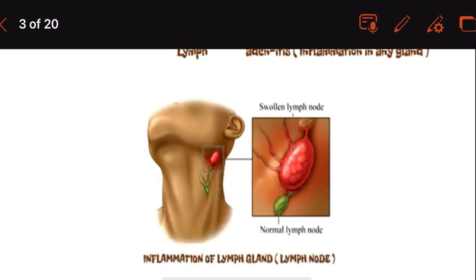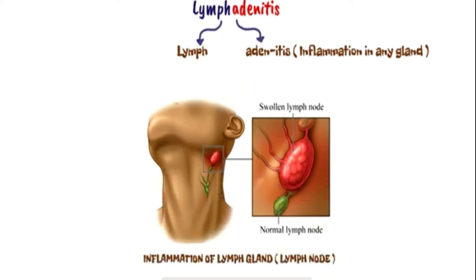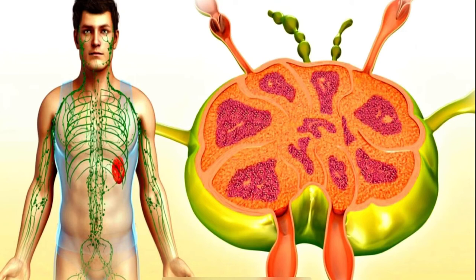The word lymphadenitis is divided into two: lymph and adenitis. The inflammation of any gland is adenitis — just like 'itis' means inflammation, adenitis means inflammation of a gland. Here they are speaking about the inflammation of lymph nodes, so it is lymphadenitis. You can see the swollen lymph node in the picture. It is the enlargement of one or more lymph nodes, which is usually due to infection.